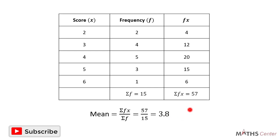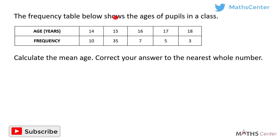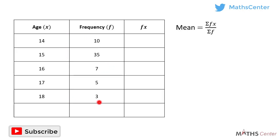Let's consider another example. The frequency table below shows the ages of pupils in a class. We have the ages and their corresponding frequencies. Calculate the mean age, correcting your answer to the nearest whole number. As before, we draw a table with three columns: the first for age (x values), the second for frequencies (f values), and the third for fx values. The mean is sigma fx divided by sigma f.